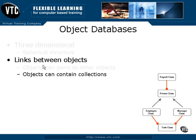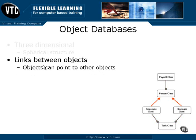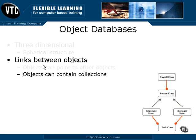A pointer is simply a link between two objects, whereas a collection is essentially a link between a parent object and a child object, where the child object is a collection contained within the parent object.